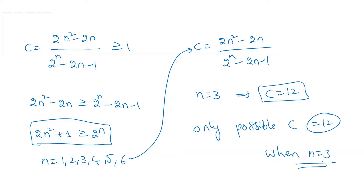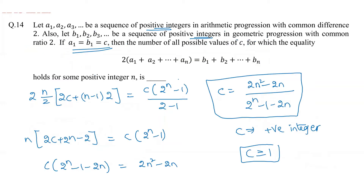Although n = 1, 2, 4, 5, 6 satisfy the inequality, they don't yield c as a positive integer, so they're invalid. Only n = 3 gives a valid c = 12. The question asks for the number of all possible values of c, not the value itself — so the answer is 1, not 12.